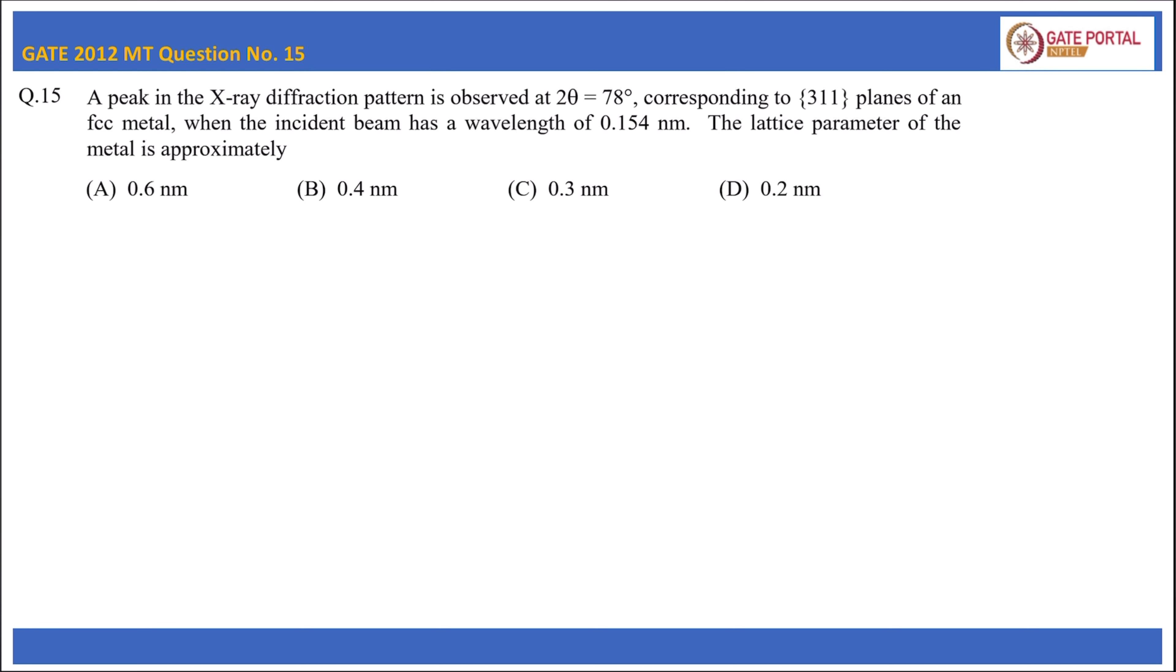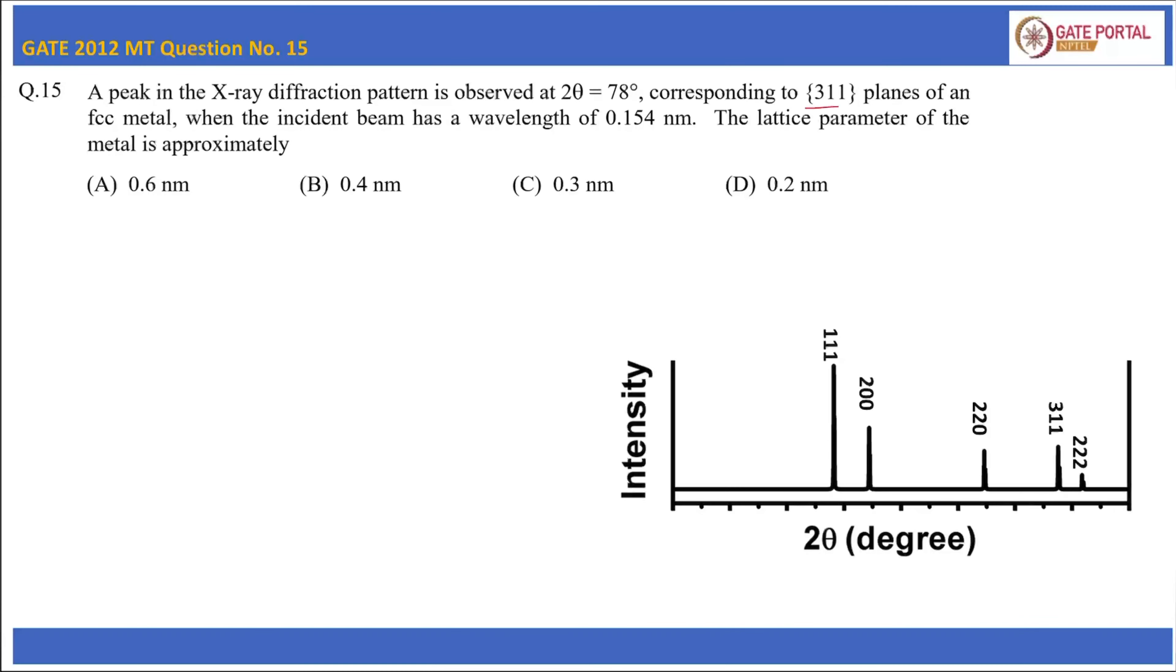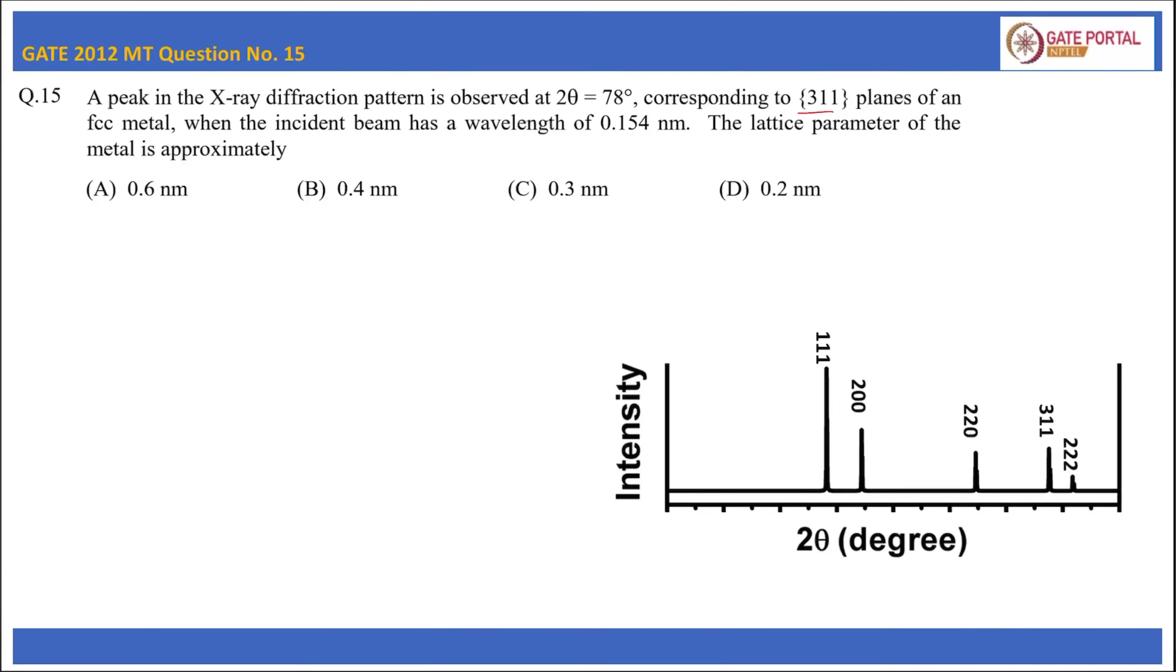It is an X-ray diffraction pattern of an FCC metal. The peak corresponding to the 311 peak has an angle of 2θ = 78°. So 2θ is given as 78 degrees. Lambda is also given, that is 0.154 nanometer, and the plane is 311.